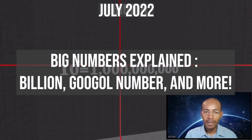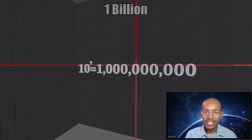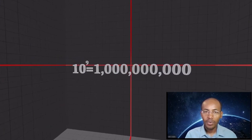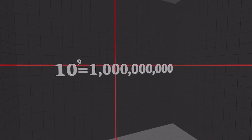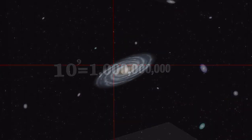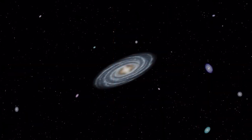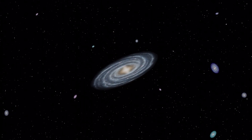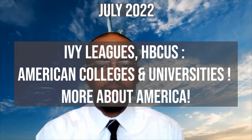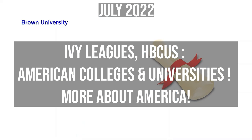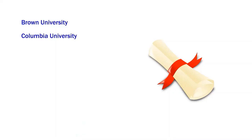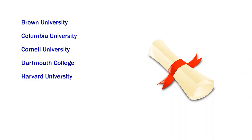A billion is 10 to the 9th power — a one followed by nine zeros. There may be over 100 billion galaxies in the observable universe. The Ivy League members include Brown University, Columbia University, Cornell University, Dartmouth College, Harvard University, the University of Pennsylvania, and Princeton University.